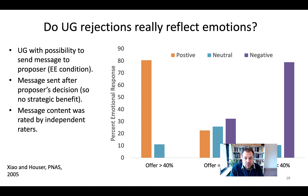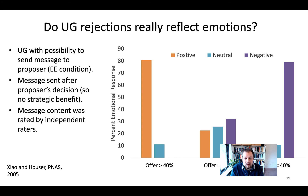Looking at the behavioral literature, you can find additional direct evidence for the role of emotions in ultimatum game rejections. This is from a study by Xiao and Hauser. They show that in the context of an ultimatum game where participants are given the possibility to send messages to the proposer — to express their emotions about receiving an unfair offer — about 80% of messages expressed negative emotions when the offer was lower than 40%.